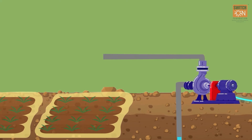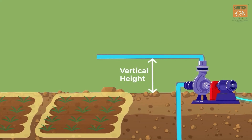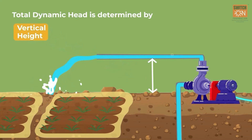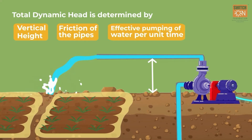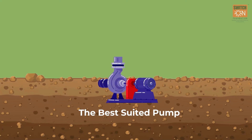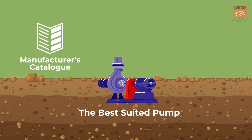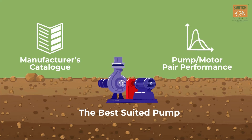The solar water pump is determined by the total dynamic head, which is calculated based on the vertical height that the water must be pumped, friction of the pipes, and the effective pumping of water per unit time. The best suited pump is decided based on manufacturer's catalogues and pump-motor pair performance curves, to ensure that the pump-motor pair can deliver the required water flow against the total dynamic head.